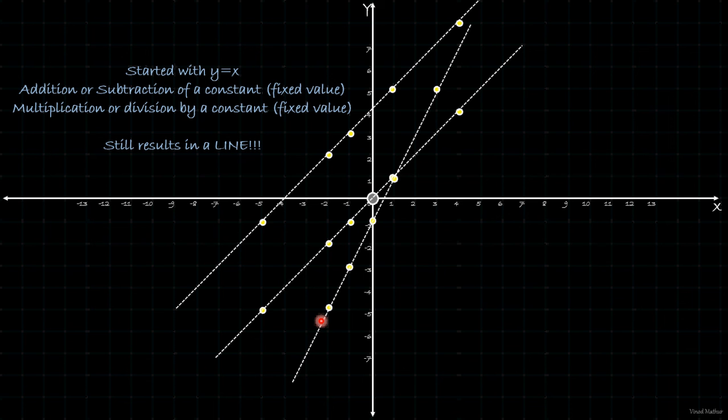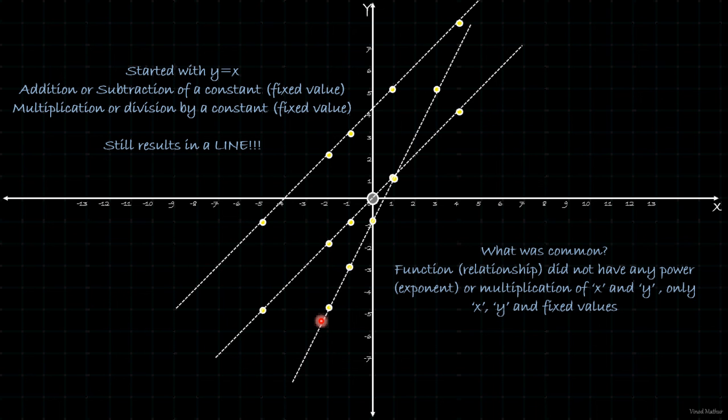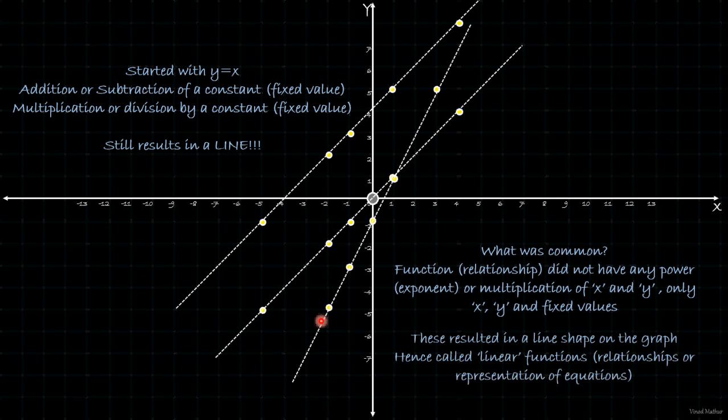If you have to ask a question, what really was common in all these three cases? What was common is that the restriction or the relationship did not have any power of x in the sense of x square or x cube. There was no multiplication of x and y together. It was just x, y, and fixed values.